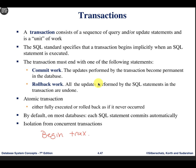After BEGIN TRANSACTION, you list your commands. Then at the end you say either COMMIT or ROLLBACK. It gives you two options. Sometimes you perform many operations and in the middle one operation fails — for example, divide by zero, or you violate a constraint — so you want to undo everything from the beginning.